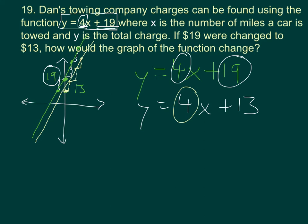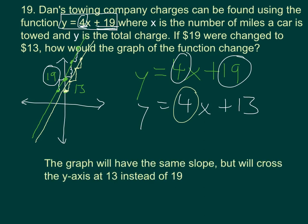So one possible answer to this question is, the graph will have the same slope, but will cross the Y axis at 13 instead of 19.